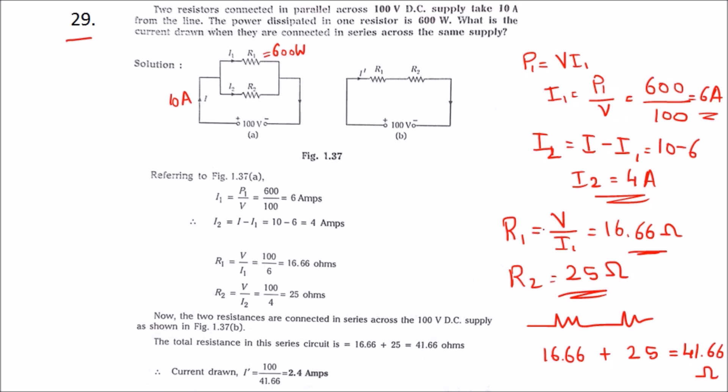Current formula: I is equal to V by R. We know V is 100 by 41.66. Therefore I will be 2.4 amps. This is what they're asking.